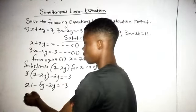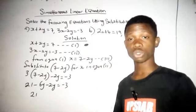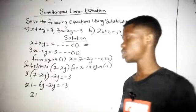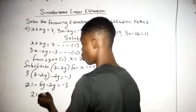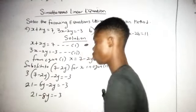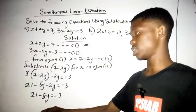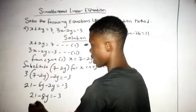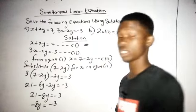Then here we have minus 2y is equal to minus 3. So this is going to be 21 minus 6y minus 2y is going to be minus 8y is equal to minus 3. So I have to collect like things. This will be minus 8y in my left hand side.